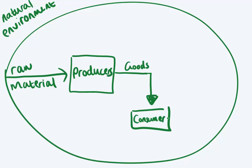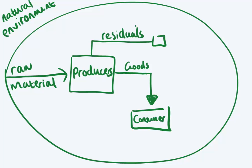Goods aren't the only thing that comes out of the production process. Another thing that comes out of the process is waste, or in this case we call it residuals — it's a type of waste or something that's left over after production. And there are two things that can happen to these residuals that come out of production.